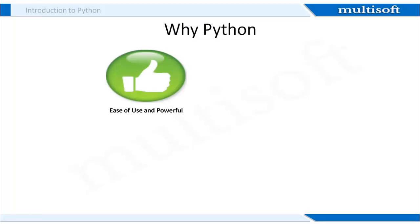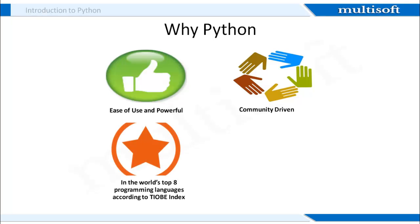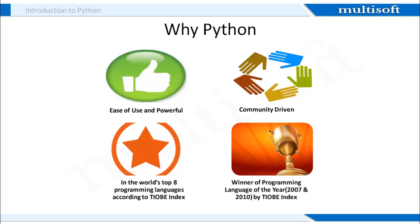Python is a very easy and powerful programming language. Since this is an open source language, it is more community-driven. And when it comes to programming languages, it is always beneficial to have a bigger and better community. As one of the leading programming languages, Python is not only amongst the top 8 programming languages as per the TIOBE index, it has also won the Programming Language of the Year award in 2007 and 2010. The TIOBE organization ranks programming languages in terms of popularity and use.